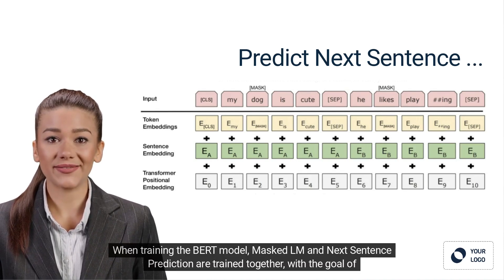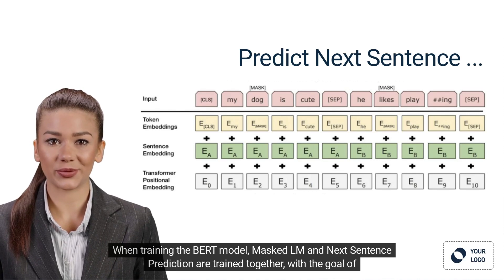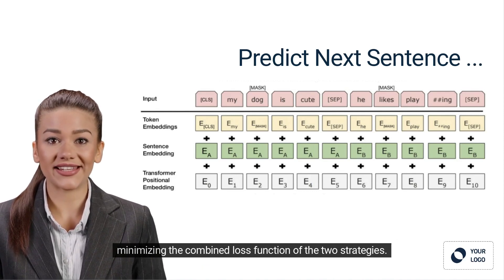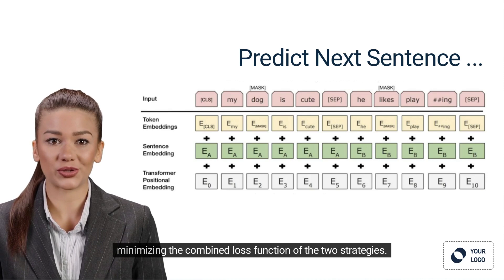When training the BERT model, masked LM and next sentence prediction are trained together, with the goal of minimizing the combined loss function of the two strategies.